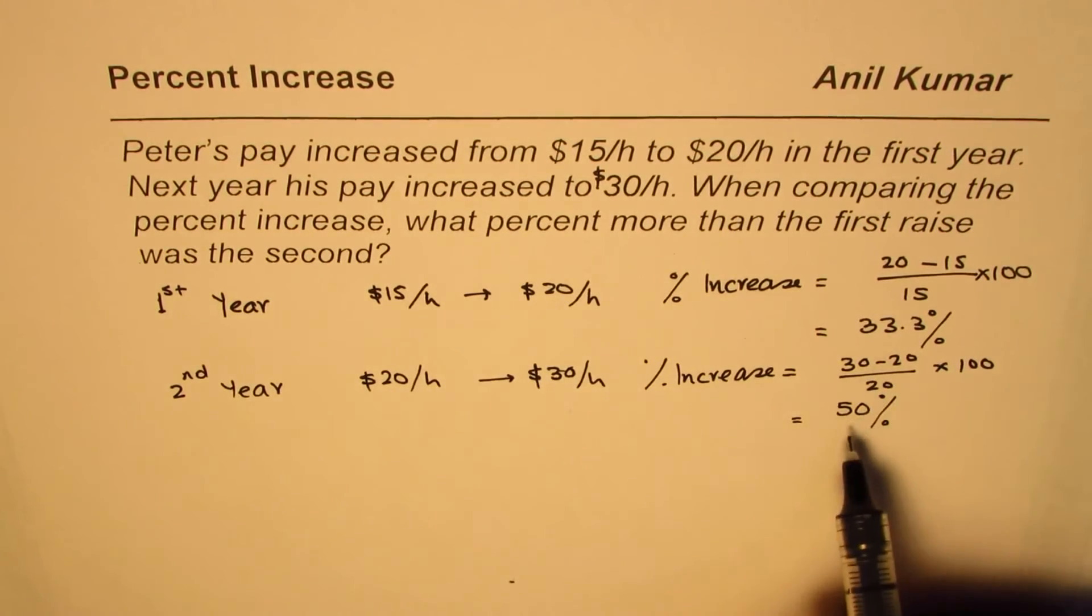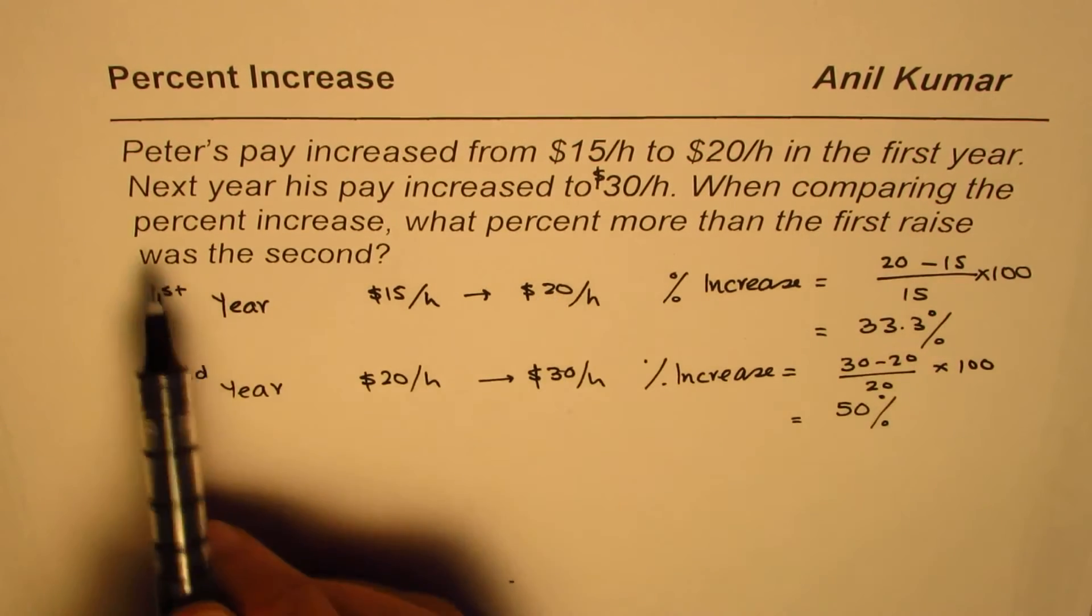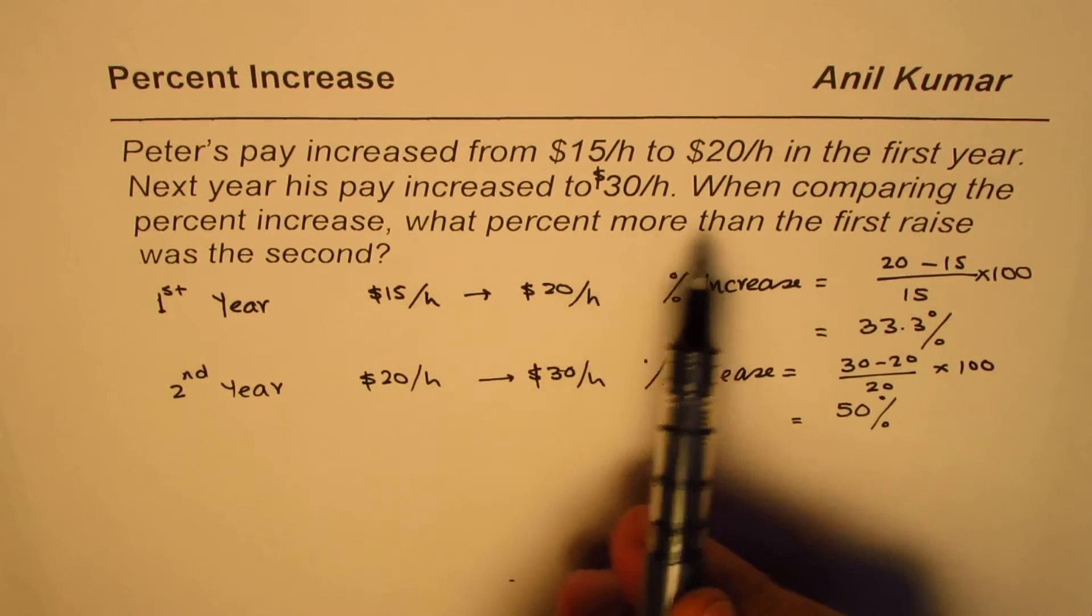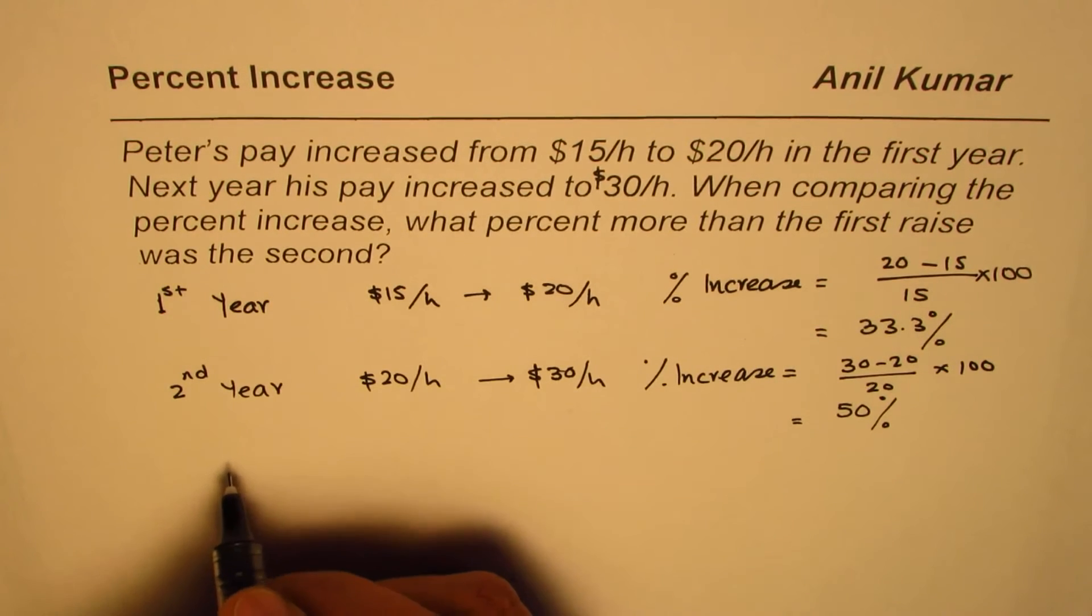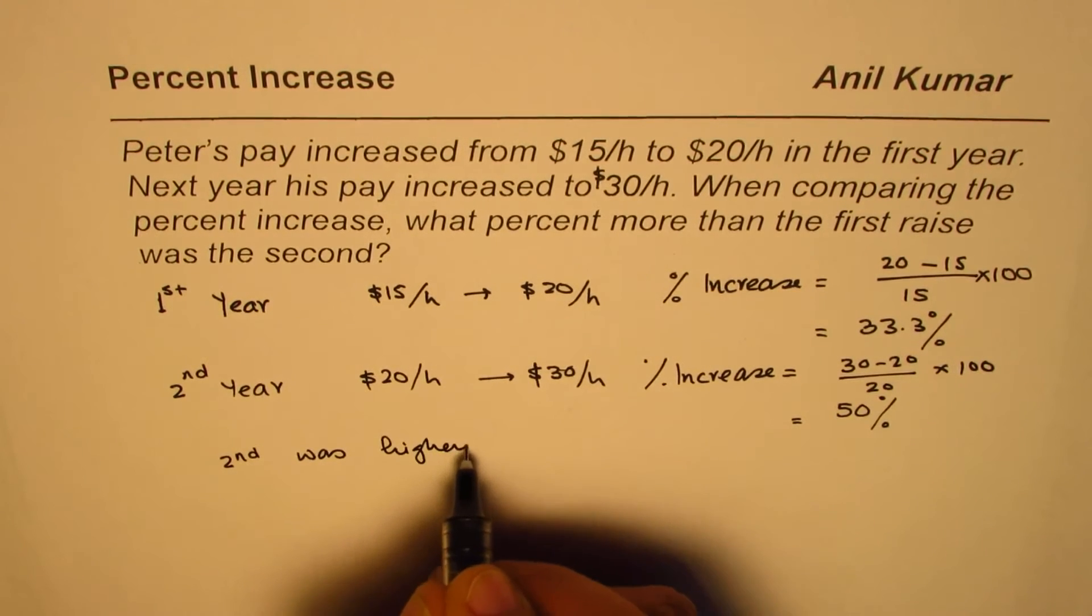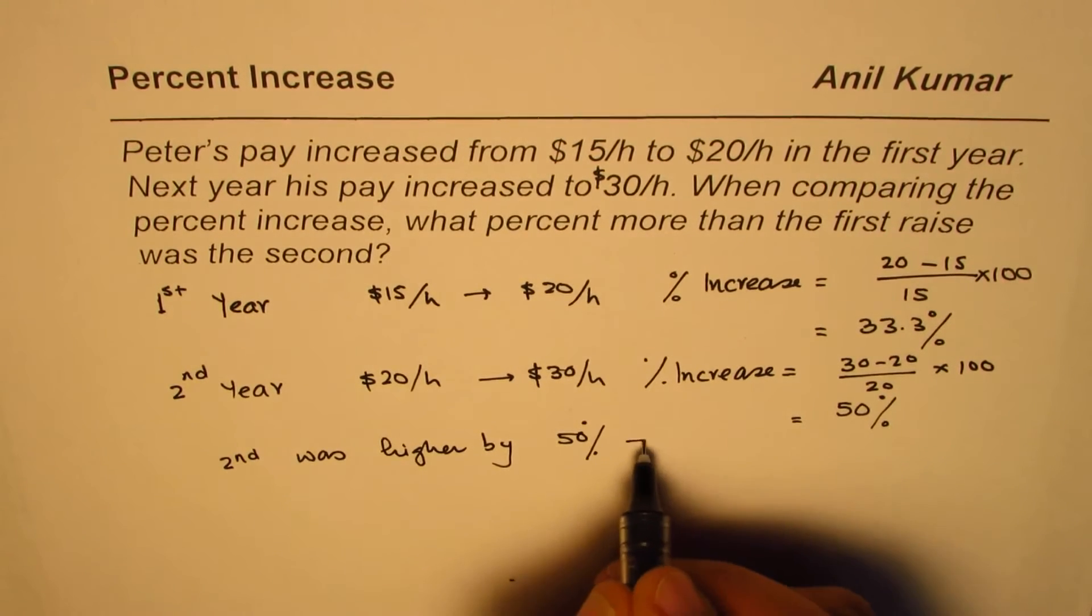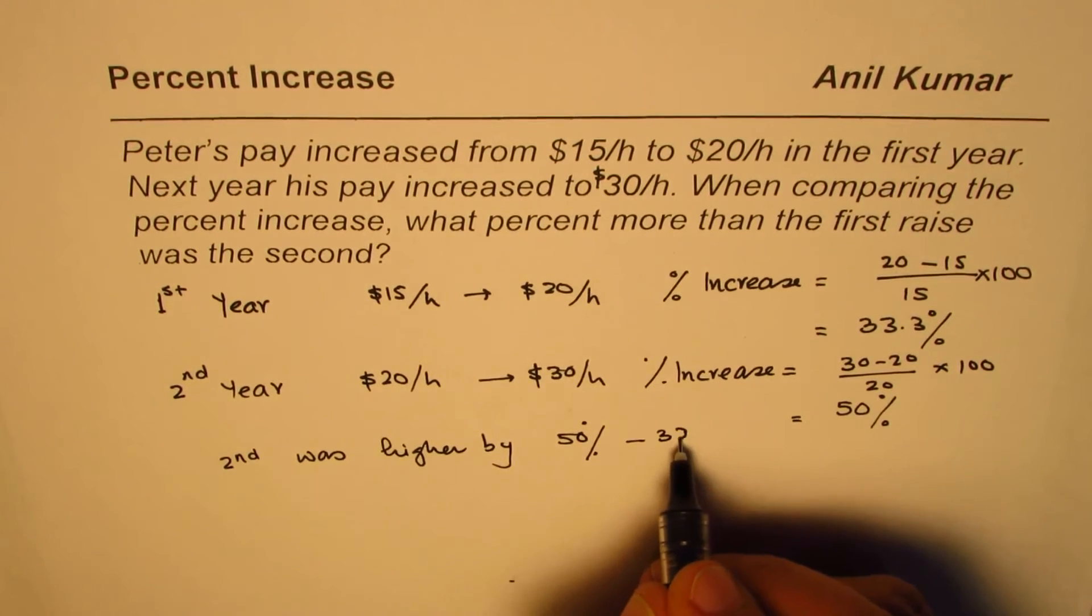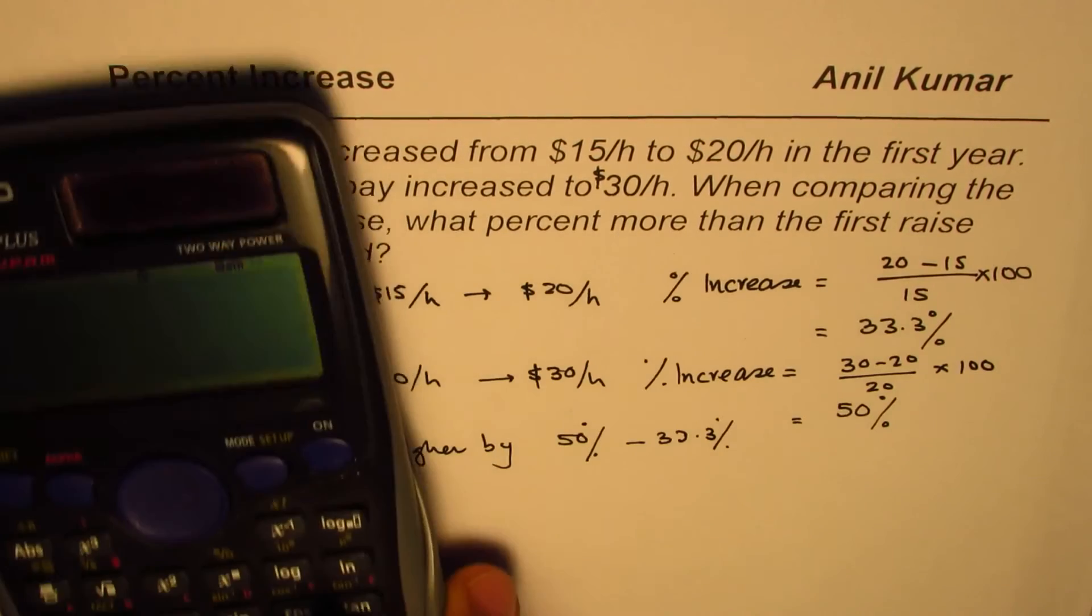As you know it is much higher than the previous one. The question is when comparing the percent increase, what percent more than the first raise was the second? So second was higher by how much. So you can do 50 percent take away 33.3 percent. That difference is what you need to know.